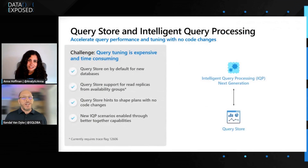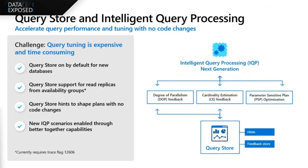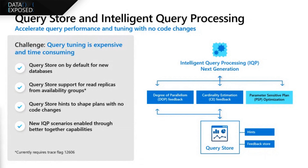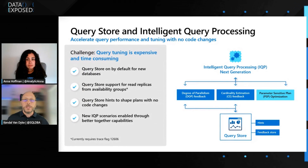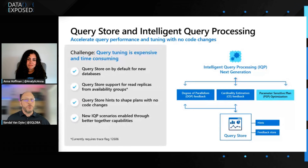I'm going to highlight what we're actually bringing into the query store and how those IQP features are working. There are a few new IQP features that are going to leverage query store — the feedback store in particular — and those are DOP feedback (degree of parallelism feedback), cardinality estimation feedback, and parameter-sensitive plan optimization. DOP feedback and cardinality estimation feedback are going to leverage that feedback store. Hints are also stored directly in the query store. PSP optimization is stored in the sense that you'll see all of the plan variations in query store. So query store plus IQP together mean that we can take advantage of all these great features and make the database run even better, faster, and more reliably without you having to touch a thing.